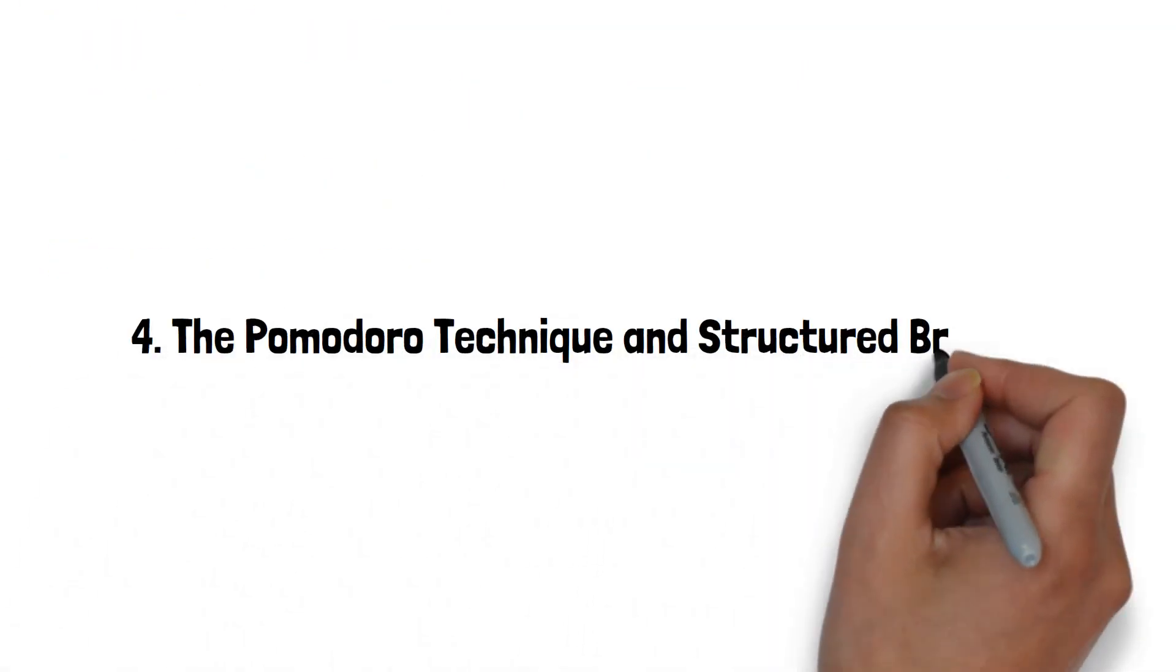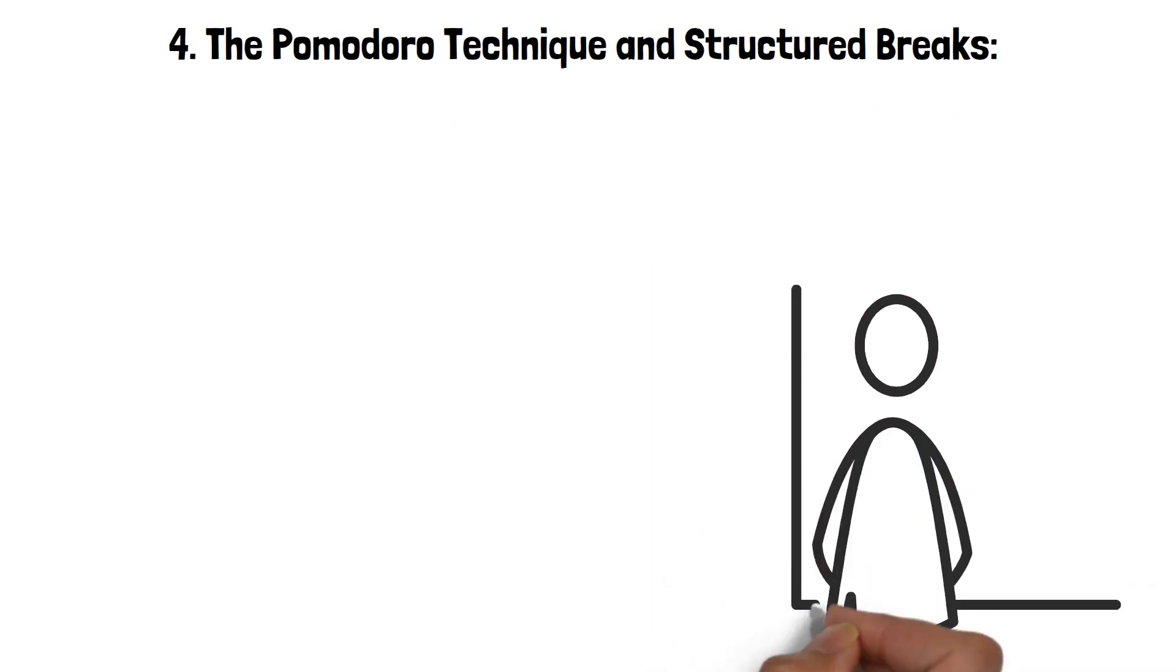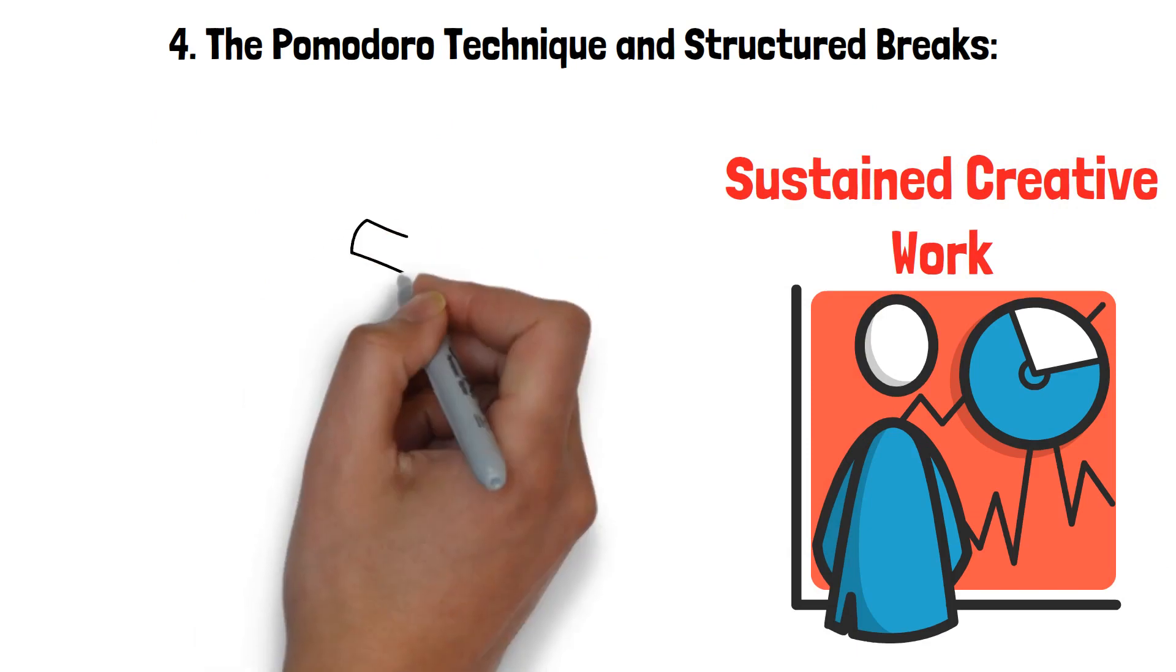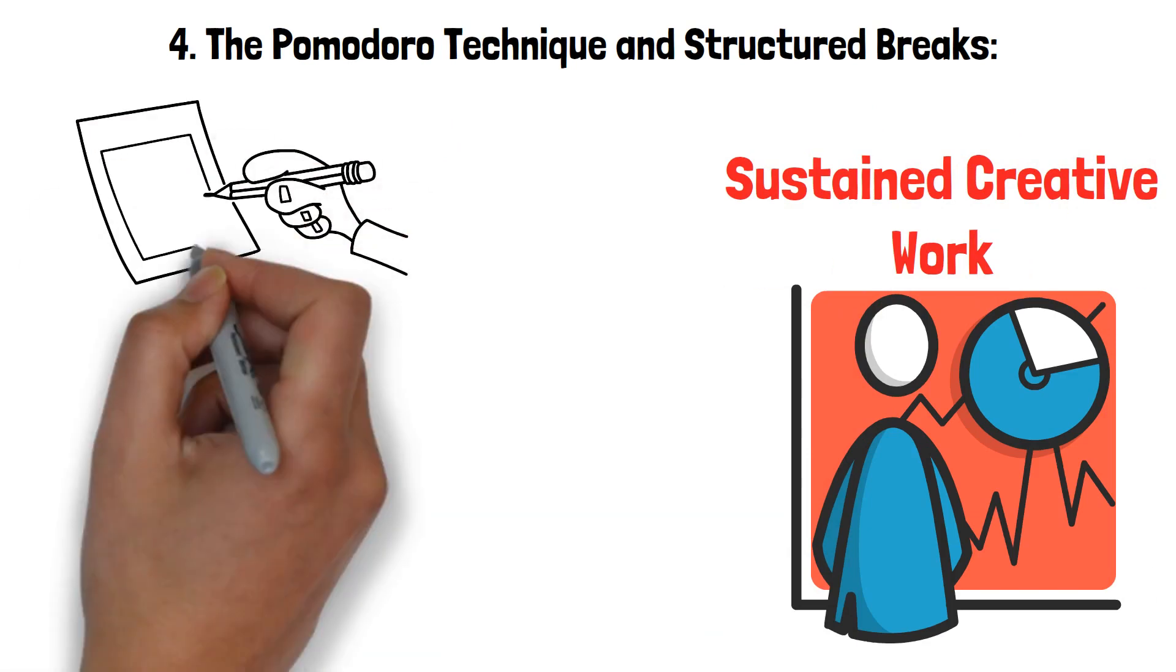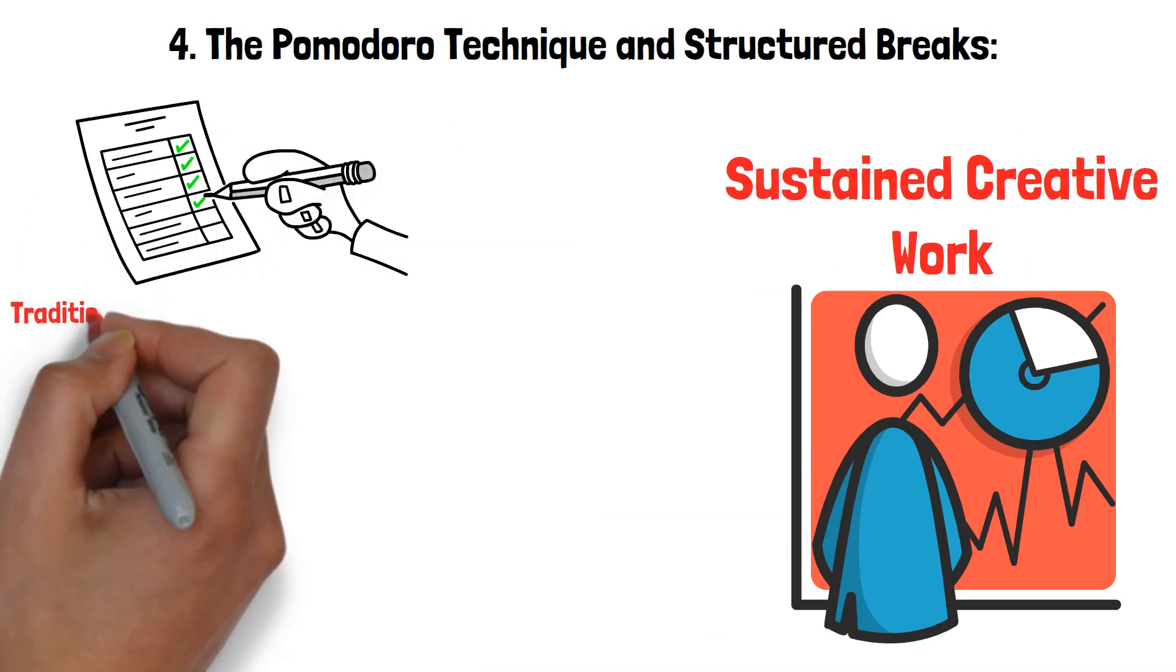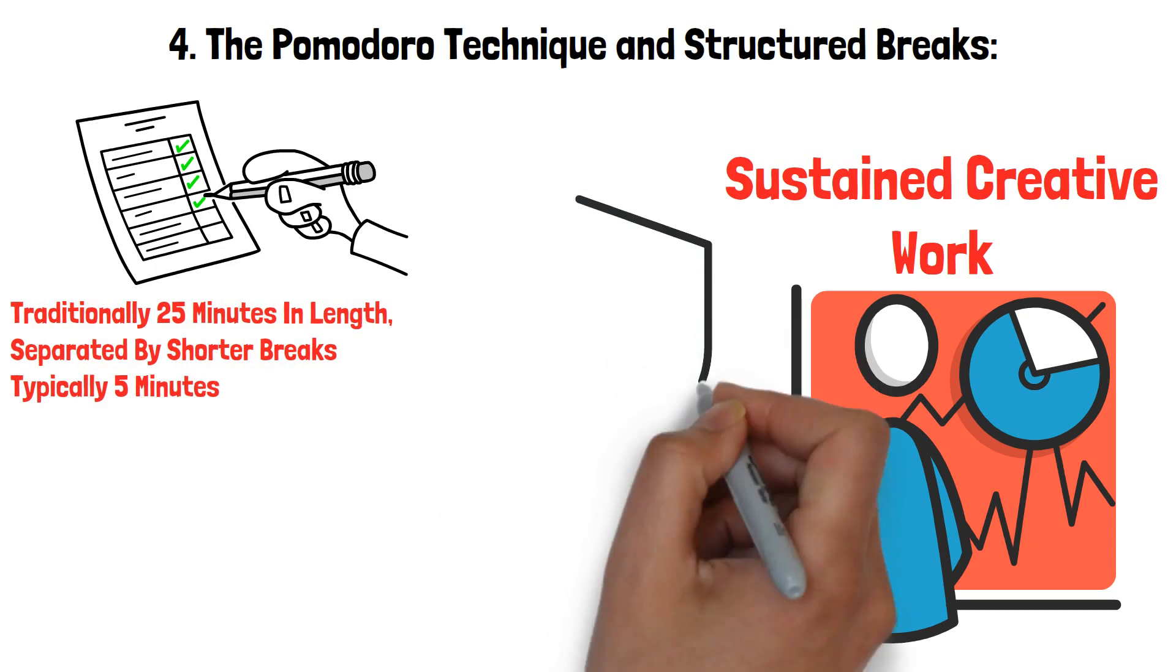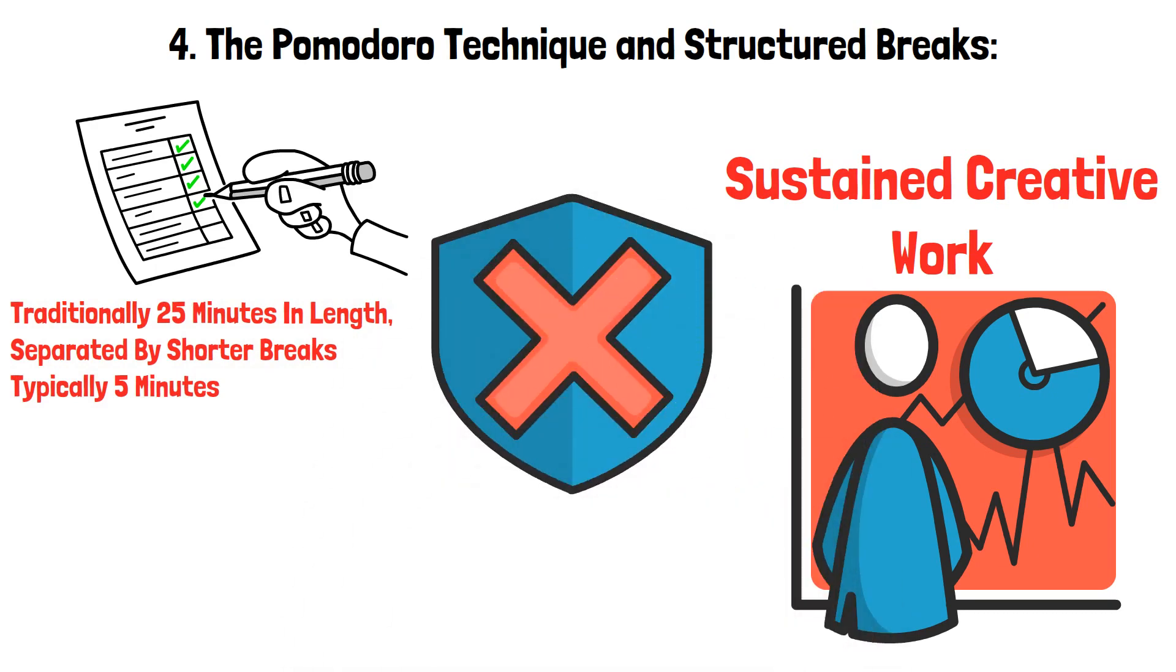The Pomodoro Technique and Structured Breaks. This method is fantastic for managing both your time and mental energy, which are crucial for sustained creative work. The Pomodoro Technique involves dividing your work into focused intervals, traditionally 25 minutes in length, separated by shorter breaks, typically 5 minutes. This rhythm helps maintain high levels of creativity without allowing burnout.